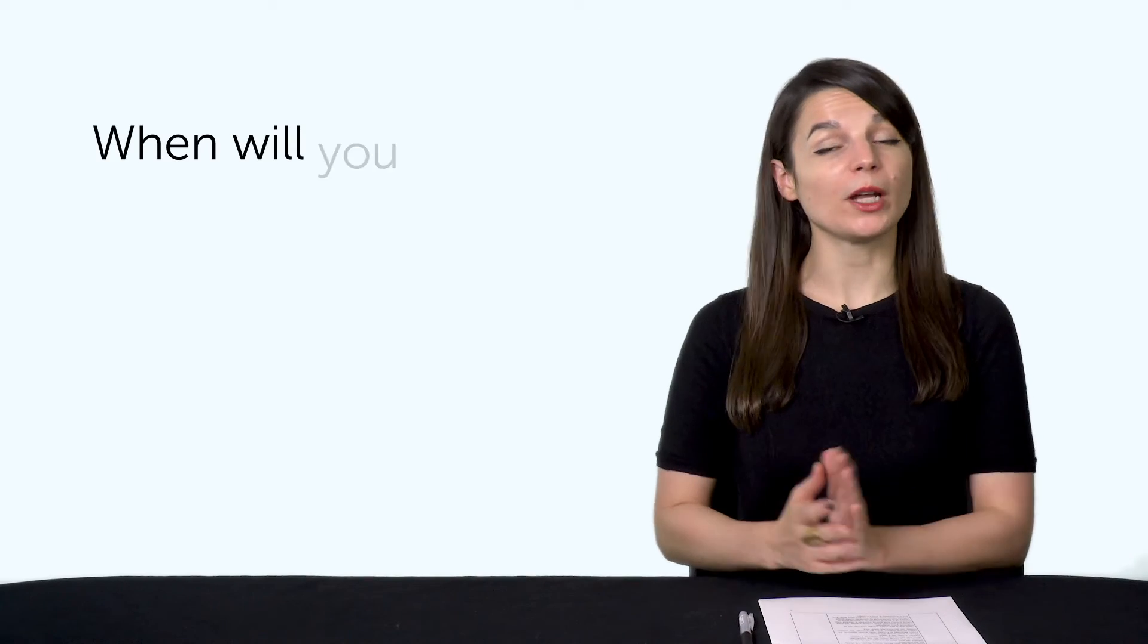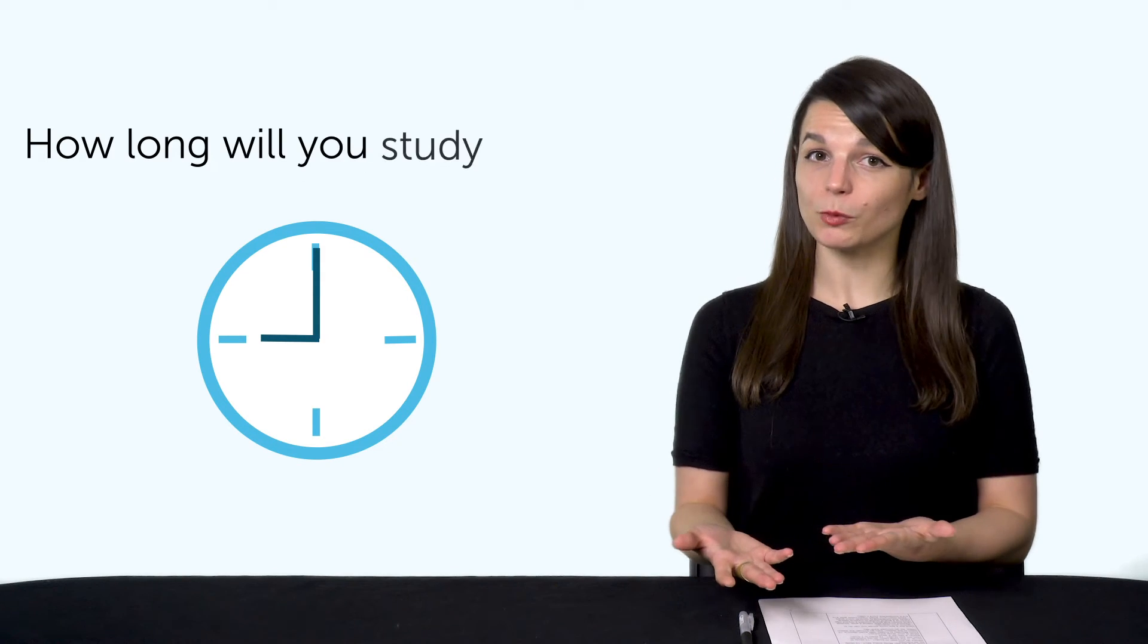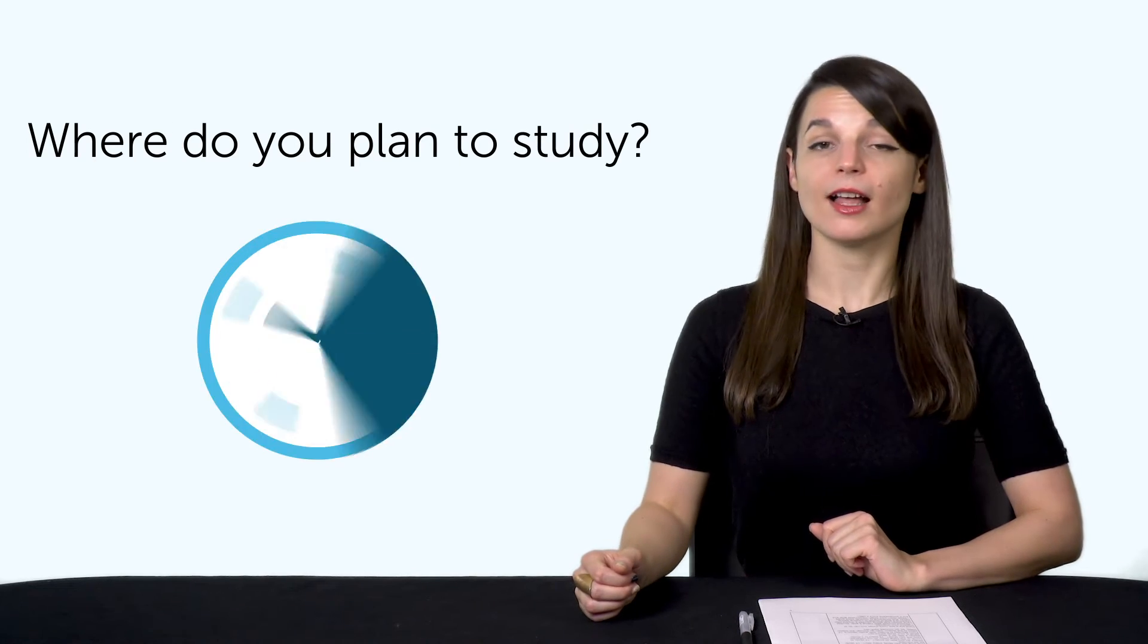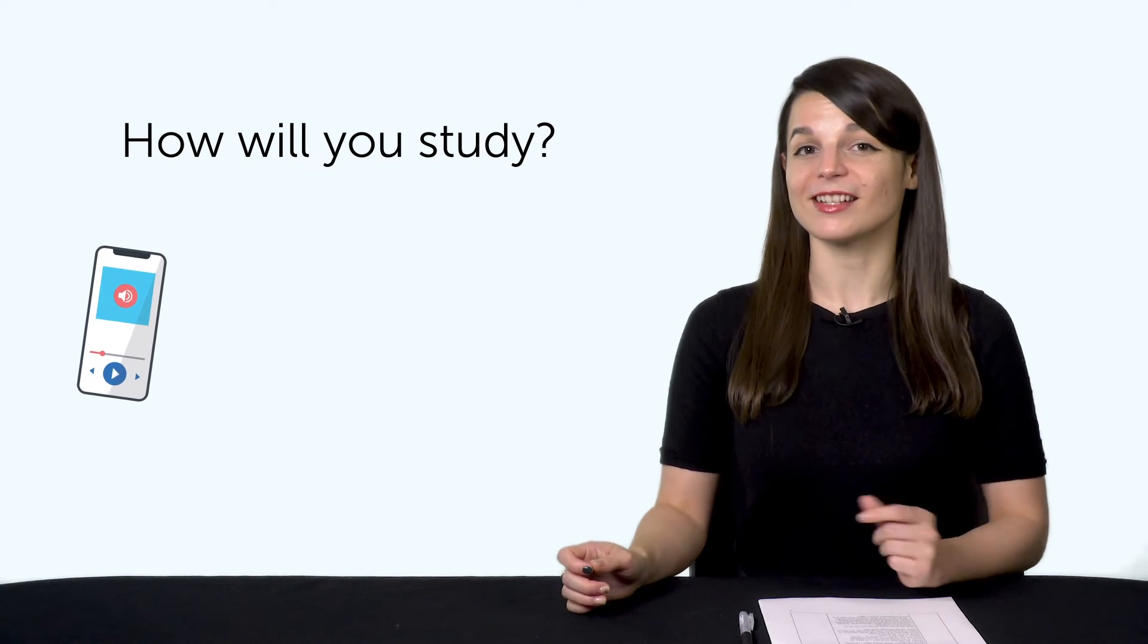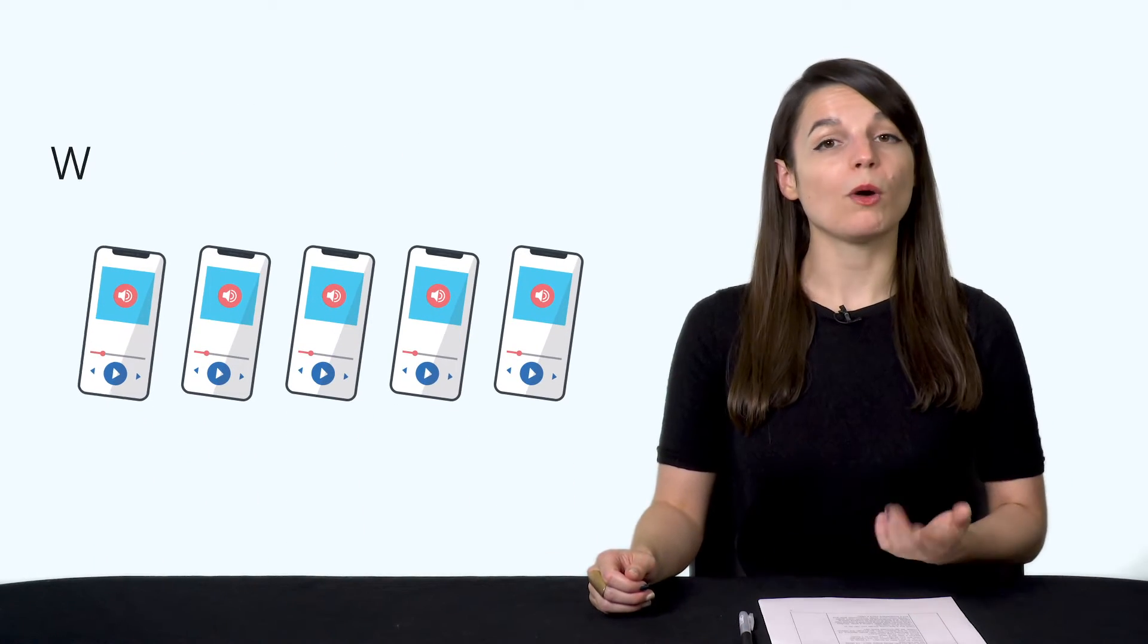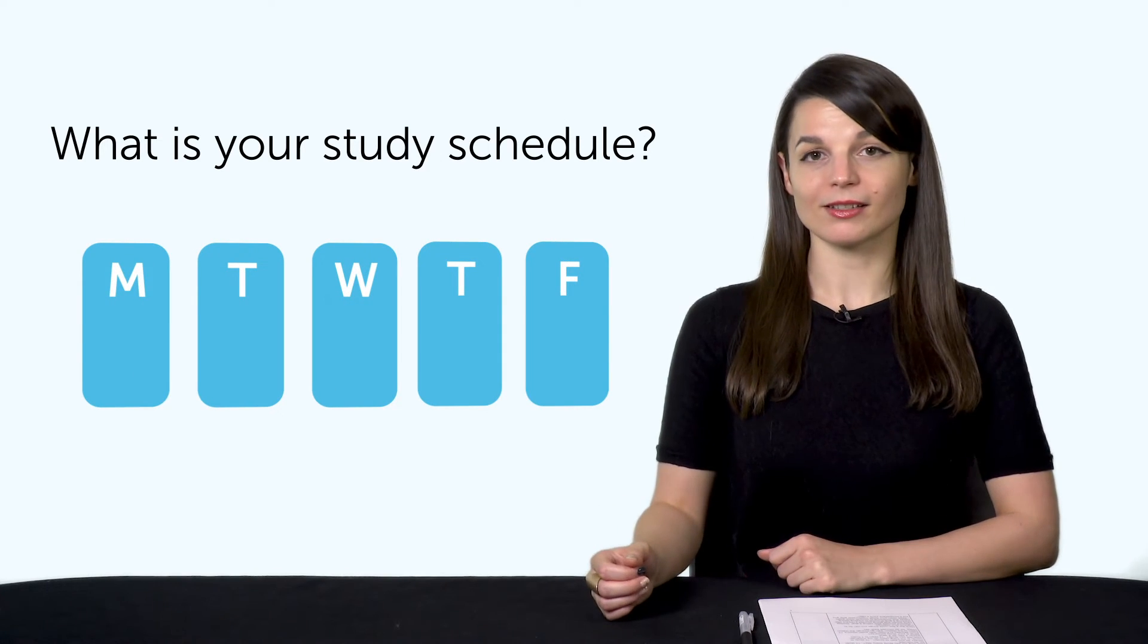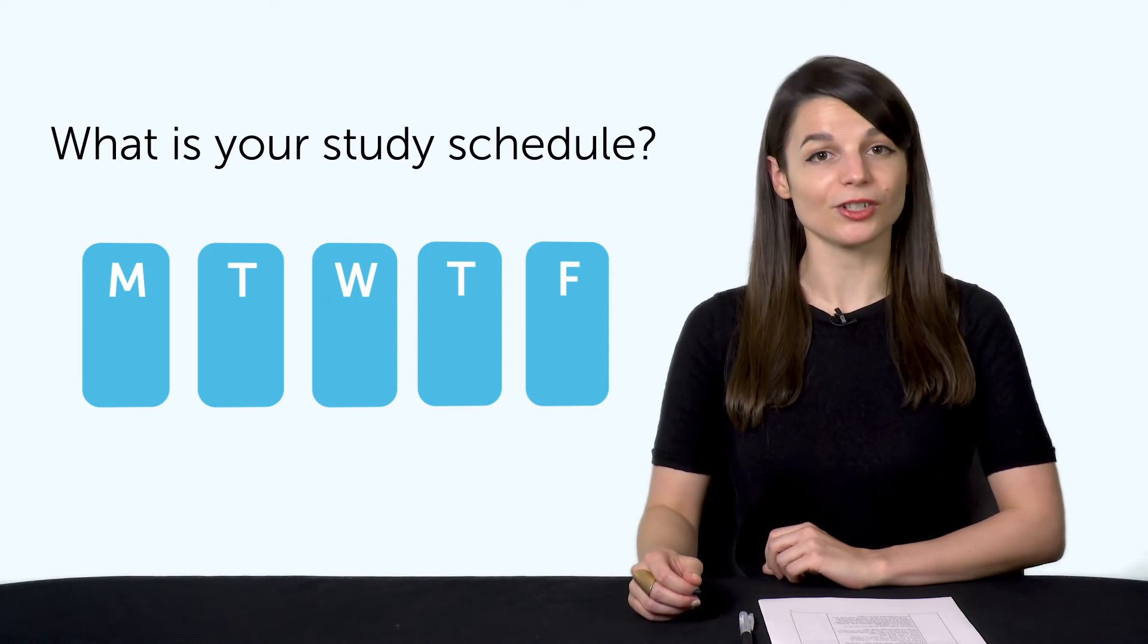So, for example, when will you study? I'll study at 9 p.m. on weekdays. How long will you study every day? I'll study for 20 minutes. Where do you plan to study? I'll study at home, in the living room, on my computer. How will you study? I'll listen to one audio lesson a day for five days. What is your study schedule? From Monday to Friday with audio lessons. I'll listen to the lesson, then go through the lesson notes for 20 minutes each day.